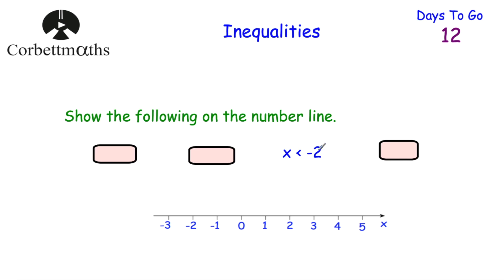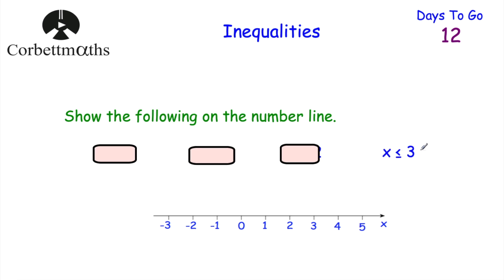For x is less than negative 2: go to negative 2, draw a hollow circle because it's strictly less than, then draw an arrow to the left. For x is less than or equal to 3: draw a shaded-in circle at 3, then an arrow to the left, showing all values that are either 3 or less than 3 would work. That's how you draw inequalities on a number line.